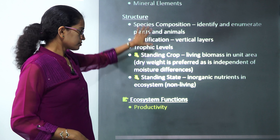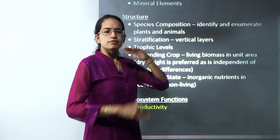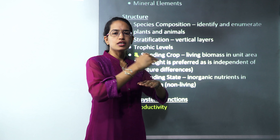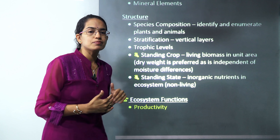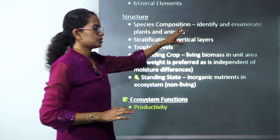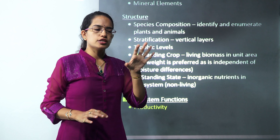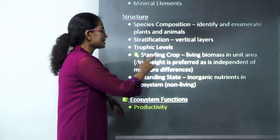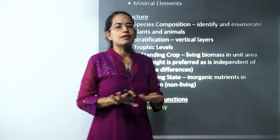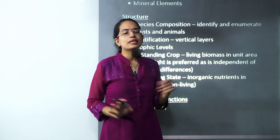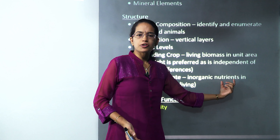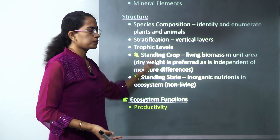Under the structure, you have various trophic levels which we will continue in the next class. Stratification is the vertical layering — small grasses, shrubs, herbs, and bigger trees — those canopies clearly visible in tropical and temperate areas. Species composition helps identify and number the flora and fauna. Standing crop and standing state are very important terminology: standing crop refers to living biomass, while standing state refers to inorganic nutrients or non-living biomass.